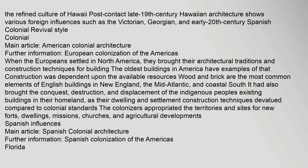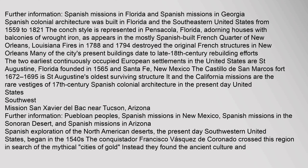Spanish Colonial architecture was built in Florida and the southeastern United States from 1559 to 1821. The conch style is represented in Pensacola, Florida, adorning houses with balconies of wrought iron, as appears in the mostly Spanish-built French Quarter of New Orleans. Louisiana fires in 1788 and 1794 destroyed the original French structures in New Orleans. Many of the city's present buildings date to late 18th-century rebuilding efforts. The two earliest continuously occupied European settlements in the United States are St. Augustine, Florida, founded in 1565, and Santa Fe, New Mexico. The Castillo de San Marcos Fort (1672–1695) is St. Augustine's oldest surviving structure.